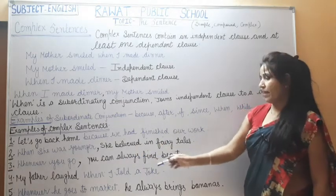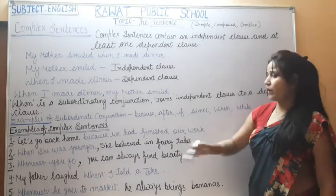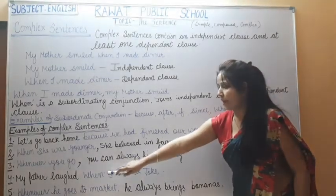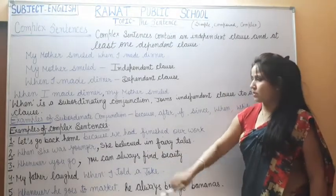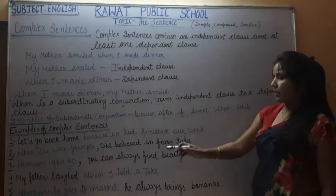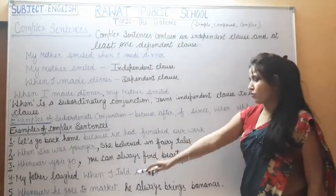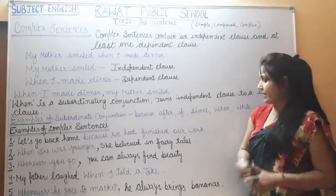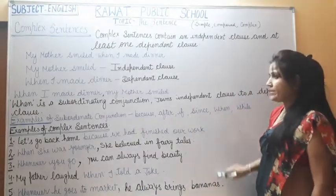Fourth: 'My father laughed when I told a joke.' My father laughed — this is independent — and 'when I told a joke' is the dependent clause. Since independent clause comes first, no comma is placed. Fifth: 'Whenever he goes to market, he always brings banana.' 'Whenever he goes to market' is the dependent clause, so a comma is placed after it, and 'he always brings banana' is the independent clause.